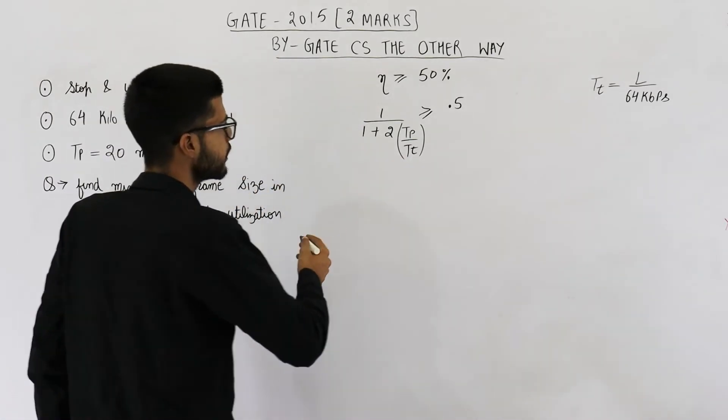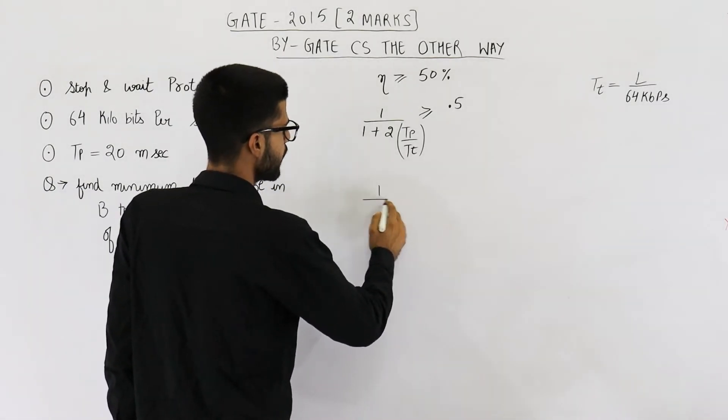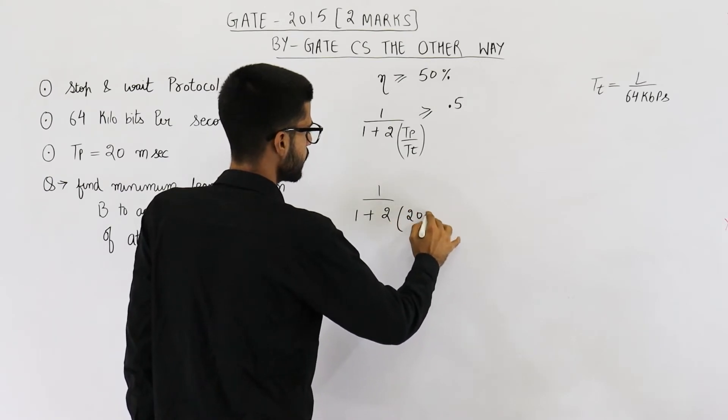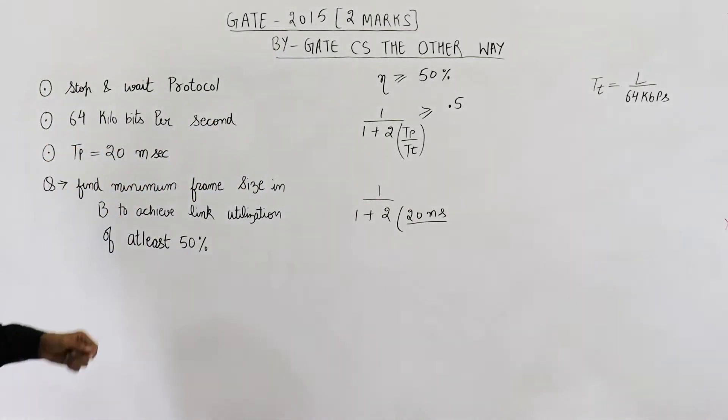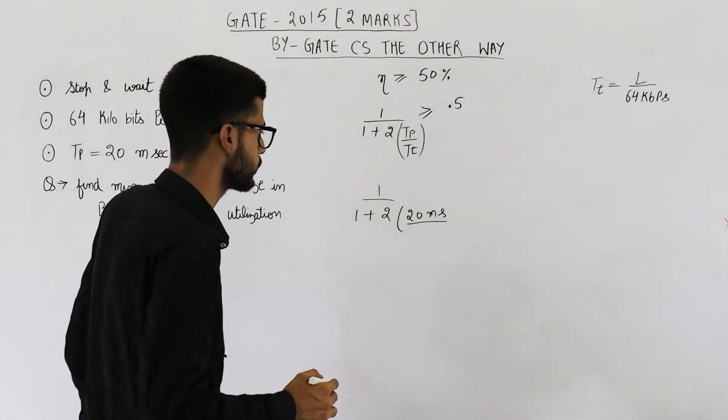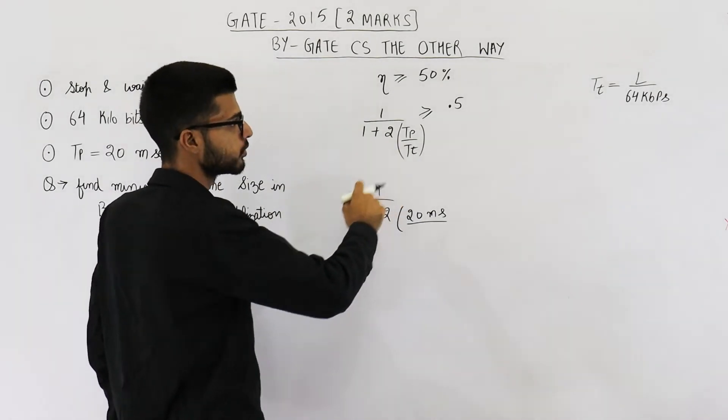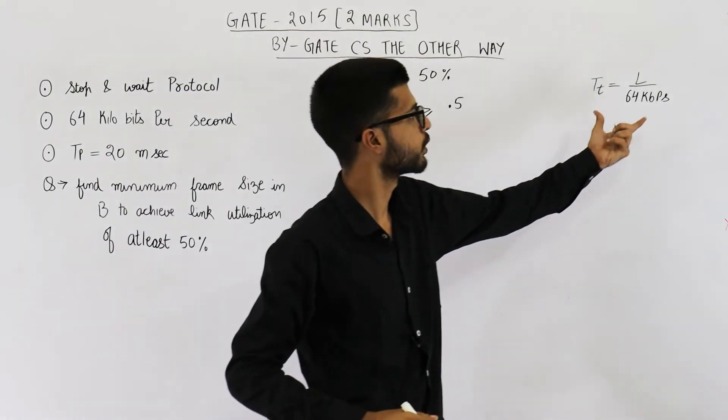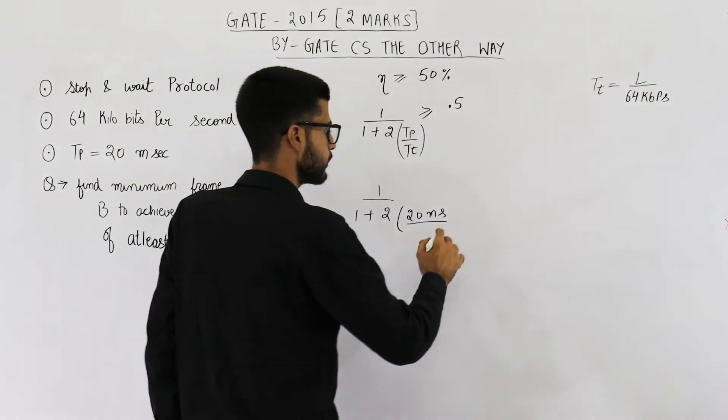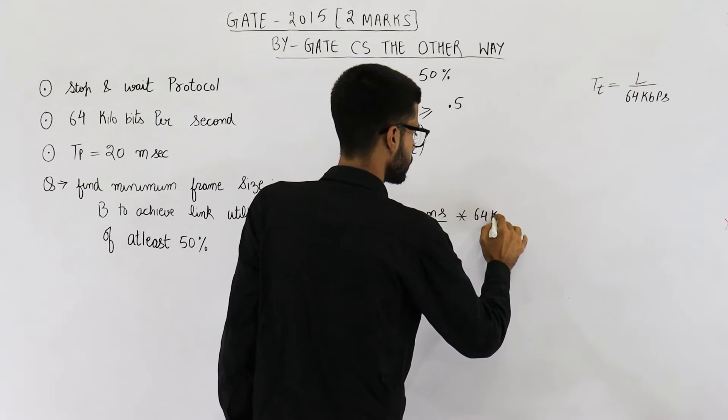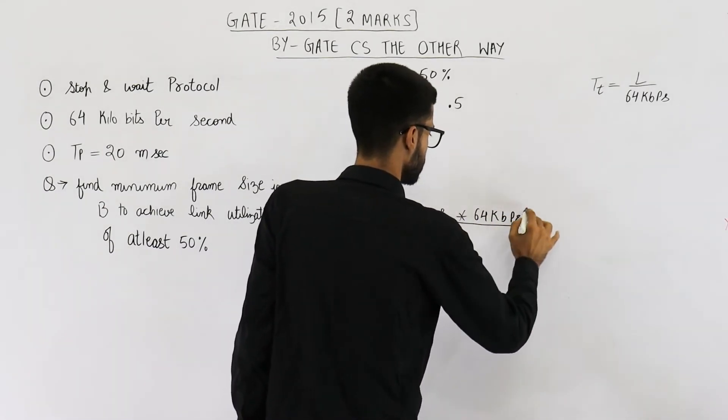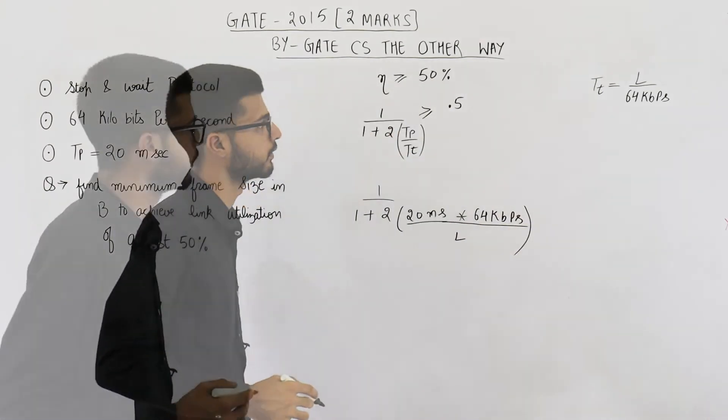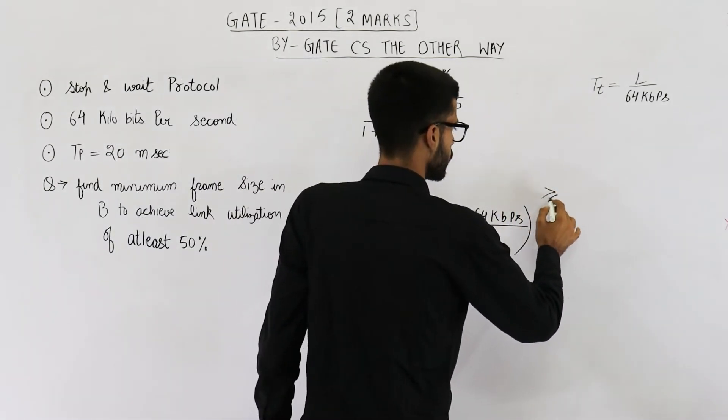Anyways, just substitute the values. So it will be 1 upon 1 plus 2 into 20 milliseconds. This is the value of Tp which is given in the question. You can just read the question from description of this video and divided by Tt. So 1 by Tt will be 64 kbps upon L into 64 kbps divided by L. And this has to be greater than or equal to 50 percent.